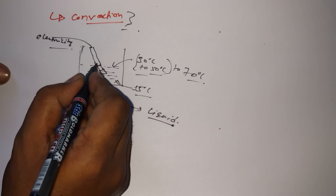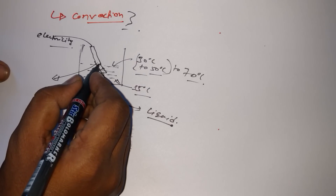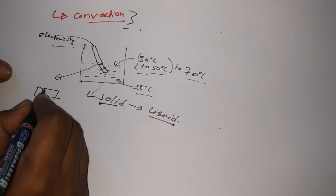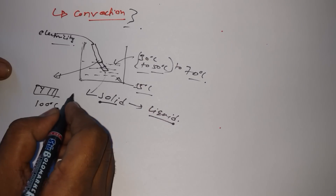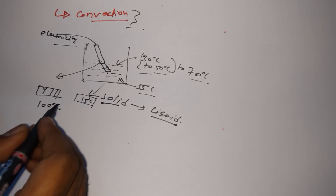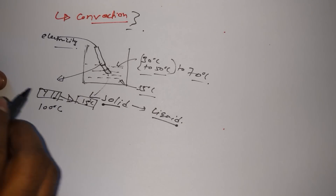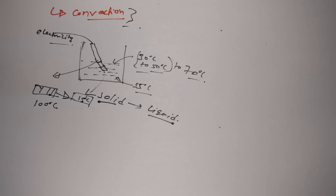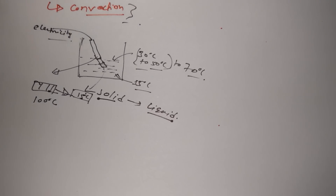Why is this happening? We are supplying electricity, so the temperature of the rod keeps increasing. If the rod temperature is 100 degrees centigrade and water temperature is only 15 degrees centigrade, then according to universal law, heat always flows from higher temperature to lower temperature. That is why heat flows from rod to water, and the temperature of water keeps increasing. There are many things to study in convection, like Newton's law and dimensionless numbers, which we will go through in detail.